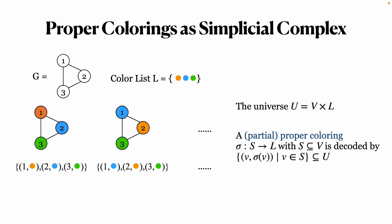In order to sample proper colorings, we first encode them with a structure known as simplicial complex. A proper coloring is encoded as a collection of vertex color pairs. For example, this coloring translates to 1 with orange, 2 with blue.